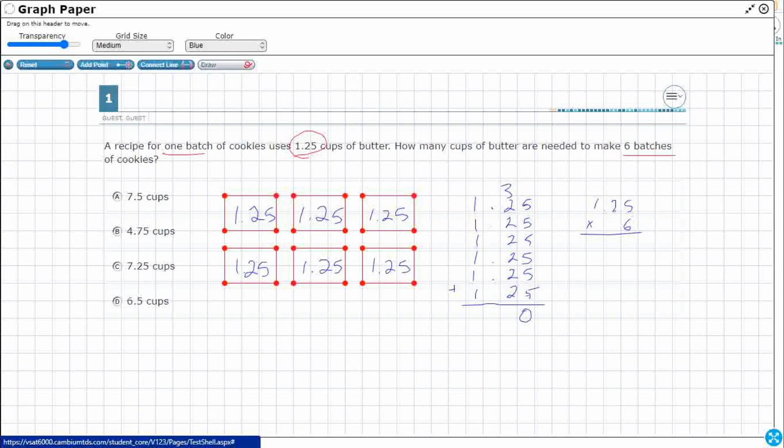Alright so I'm gonna skip count by twos and then add that 3 at the end. 2, 4, 6, 8, 10, 12. 12 plus 3 is 15. Carry the 1. 1, 2, 3, 4, 5, 6, 7. Alright so 7.50.